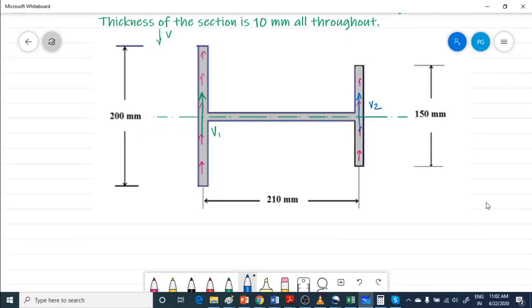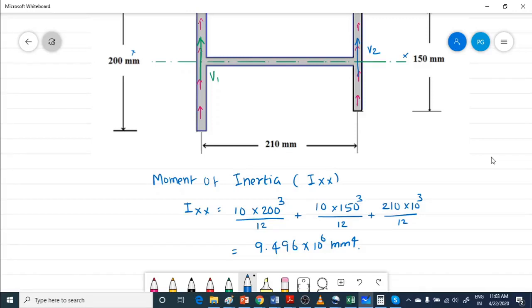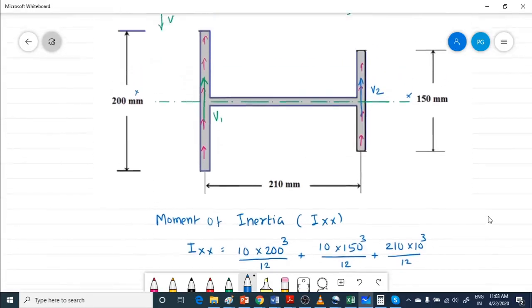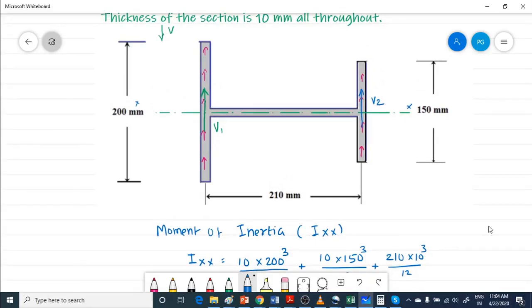You need to find out V1 and V2, so for that first you need the moment of inertia about section x-axis. Mark various points: this point is A, this point is B, this point is C, this point is D, this point here is O, N.